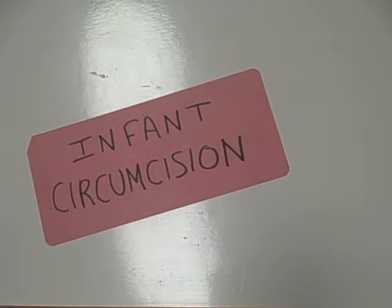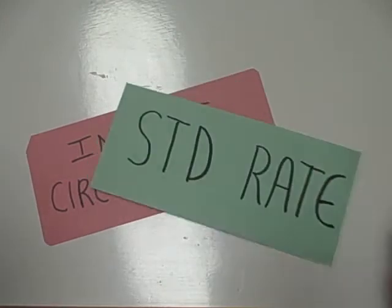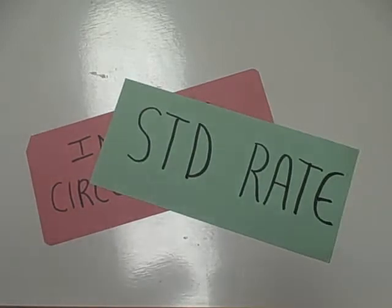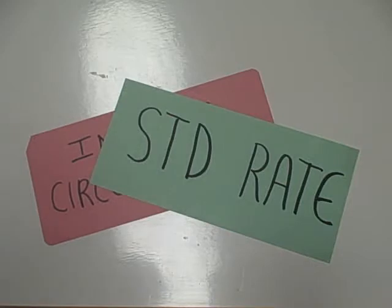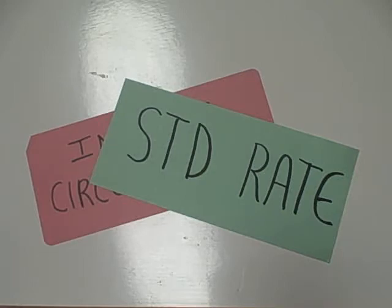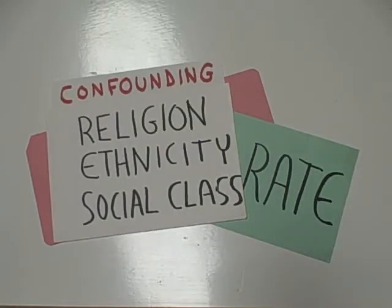Suppose you studied infant circumcision as an independent variable and the rate of sexually transmitted diseases as the dependent variable. About a hundred years ago in Europe, it was noticed that there was a correlation between these two variables, and the assumption was that if we simply circumcised more males we could reduce the rate of sexually transmitted diseases, especially syphilis. The problem is there were confounding variables such as religion, ethnicity, and social class, because it was largely Jewish men that were being circumcised as infants.